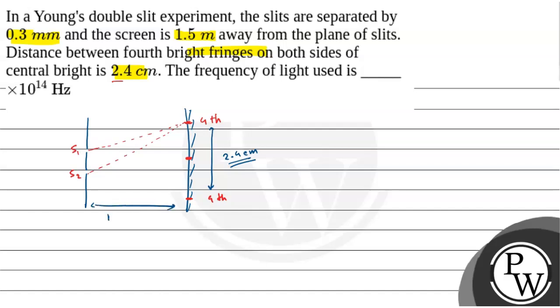The distance between the slit and the screen, that is D is given 1.5 meter and the slit ki beech mein jo distance hai, that is small d, that is 0.3 mm. So, this question mein humein jo ki concept hoga, that is position of nth bright fringes in YDSE.